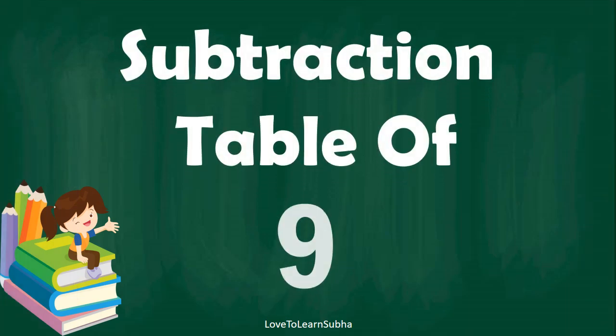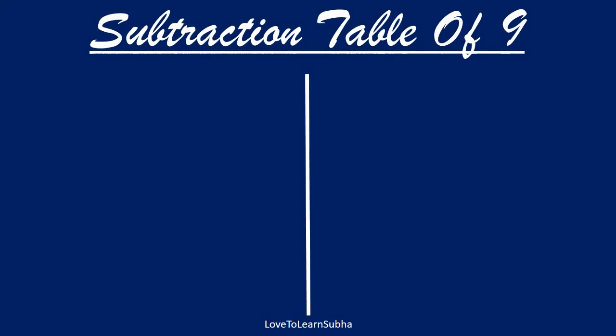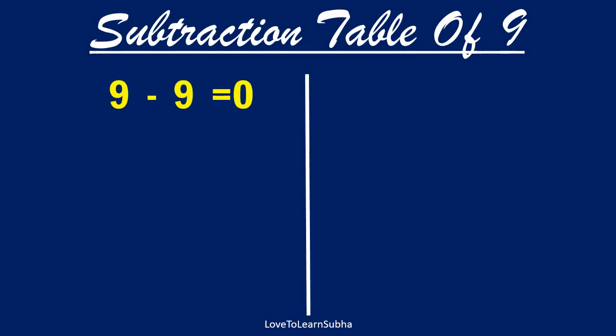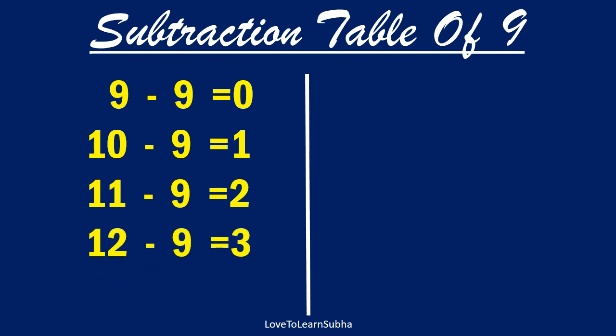Subtraction table of 9. 9 minus 9 equals 0. 10 minus 9 equals 1. 11 minus 9 equals 2. 12 minus 9 equals 3. 13 minus 9 equals 4.